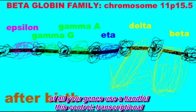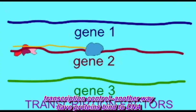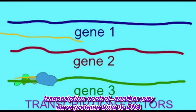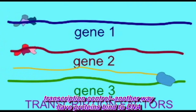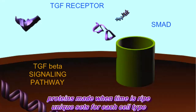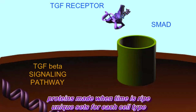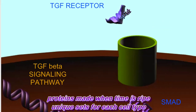Transcription control another way: have proteins bind to DNA. Proteins made when time is ripe, unique sets for each cell type.